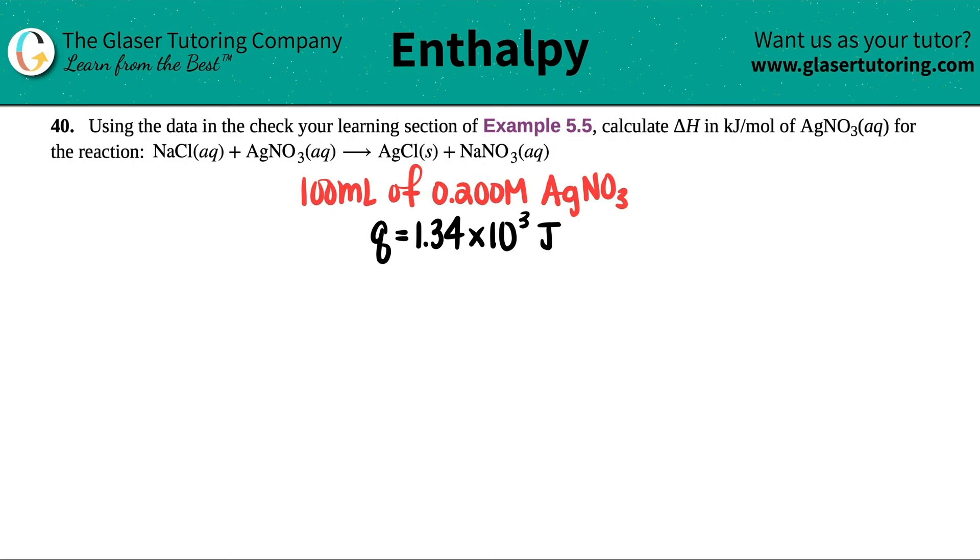Number 40. Using the data in the check your learning section of Example 5.5, calculate the delta H in kilojoules per mole of silver nitrate, which is AgNO3, for the reaction. Then they gave us this: NaCl plus AgNO3 will yield AgCl plus NaNO3.